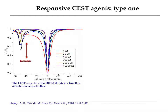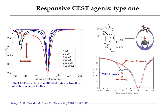As the CEST effect is quite sensitive to water exchange rate, it is useful to create responsive agents based on water exchange rate modulation. The first type of CEST responsive agent is based on a change in CEST intensity as a response, and most CEST responsive agents fall into this category. For example, this boronic acid-containing agent is sensitive to glucose. As you can see from the CEST Z-spectrum, the CEST intensity increases in the presence of glucose, which means the water exchange rate slows down upon glucose binding.